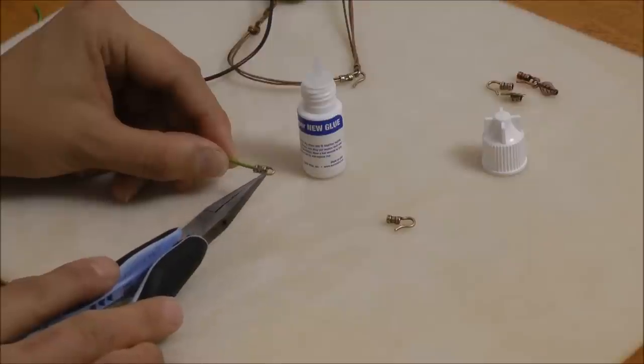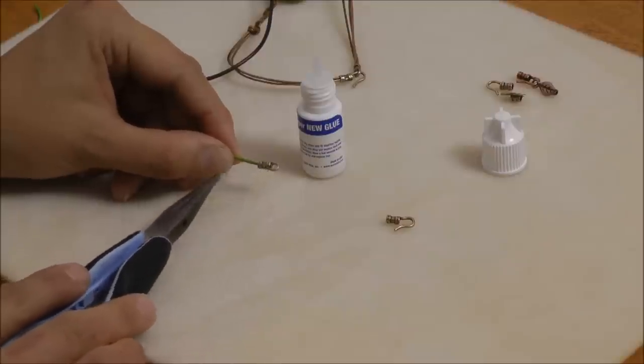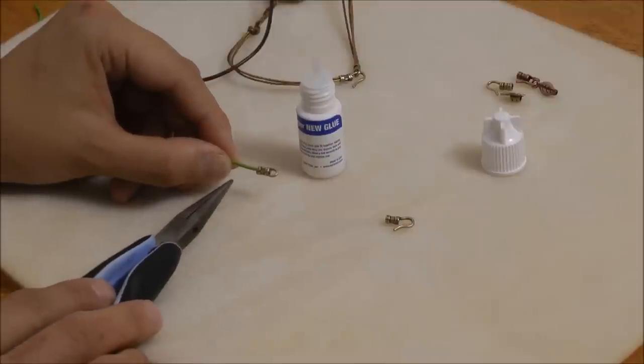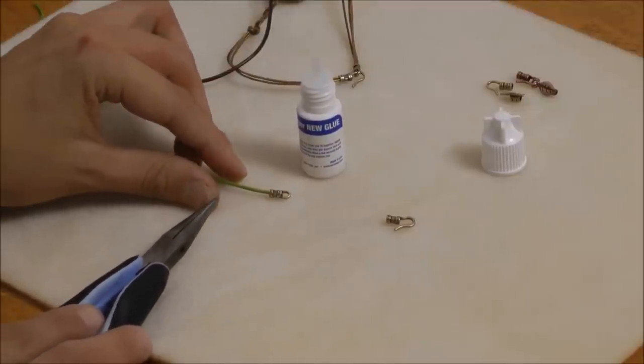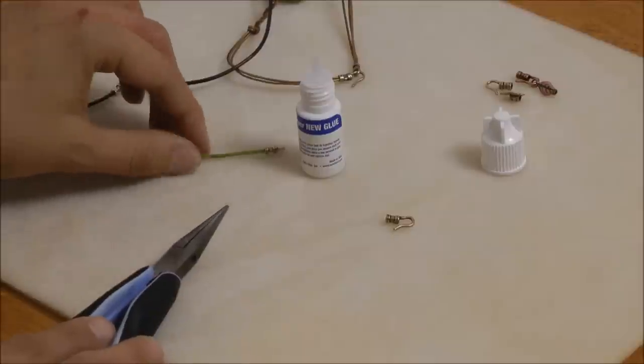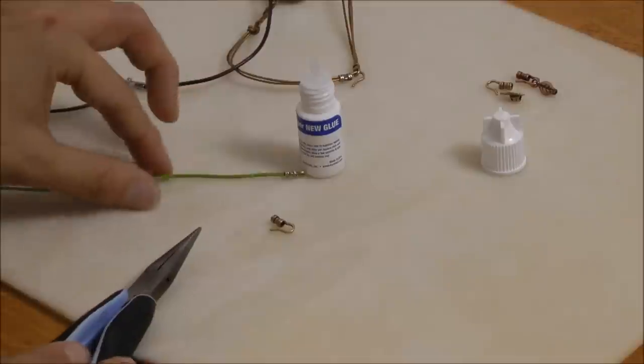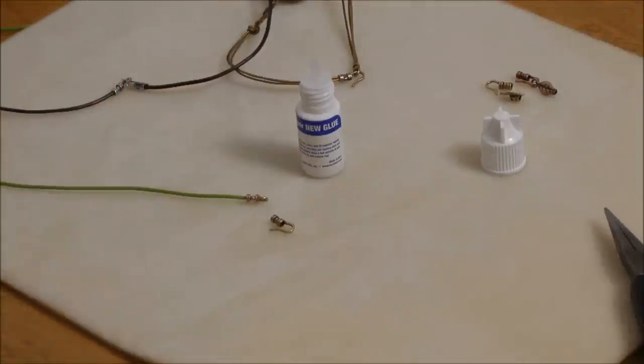And you'll know as you're crimping it if you're squeezing the wrong spot. If you try to squeeze either end of the crimp, that metal is going to be a lot harder and you won't be able to squeeze it as easily as you do with that middle section. Now to finish this, I would just repeat the same thing with the other end of the clasp and that's all you do for that technique.